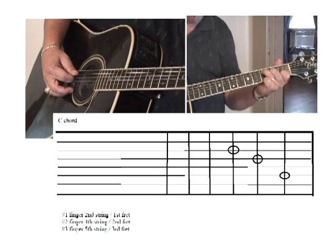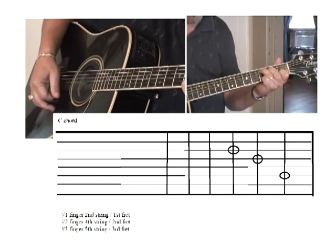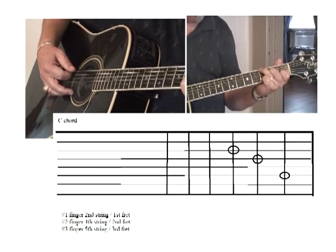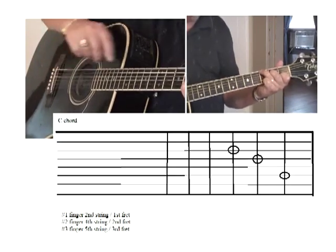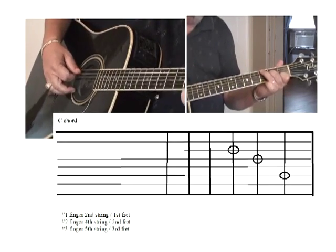So pick your fifth string down here, make C, pick your fifth string, strum, then go up here, pick your top string, your sixth string, and strum while you're noting the top string, and then go back.